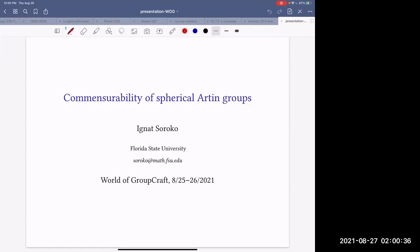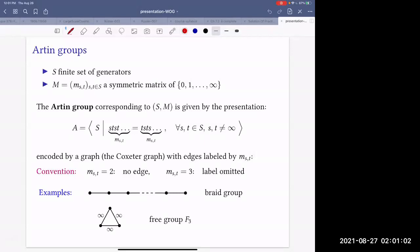I will talk about commensurability of spherical Artin groups. My first block is about what are Artin groups. Artin groups are given by a finite set of generators and a symmetric matrix of non-negative integers or infinity. The Artin group corresponding to this data is given by the following presentation.